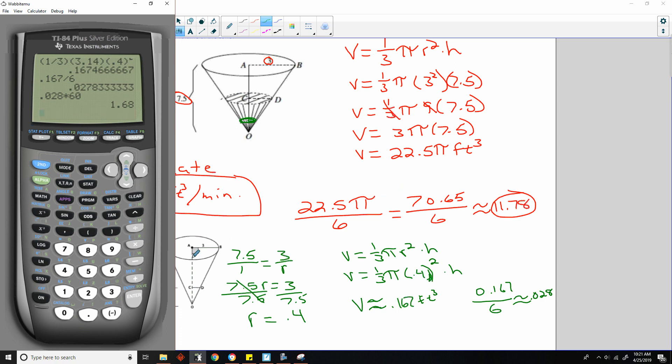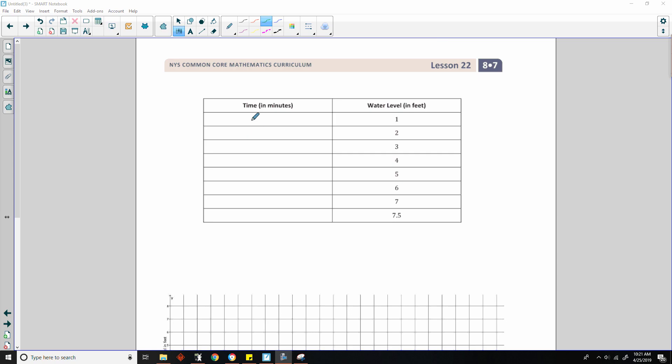So if I take 0.028 times 60 seconds in a minute, then it'll tell me how many seconds it will take to fill the cone up to this level here, and it would be 1.68 seconds. A little bit more than a second and a half, and we're already at the 1 inch level. So I'm going to put that here, 0.028 time in minutes.